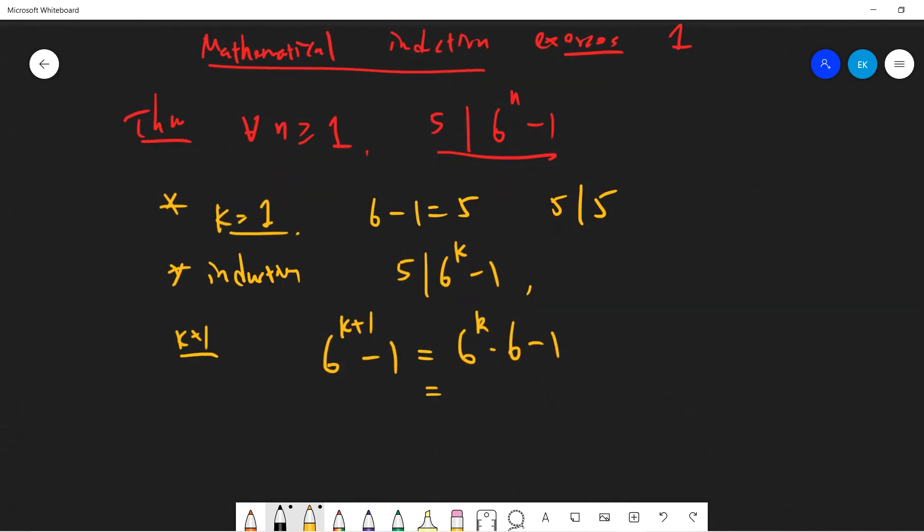Then you need to think a little bit and I'll try to change it as 6 to the k minus 1, right?